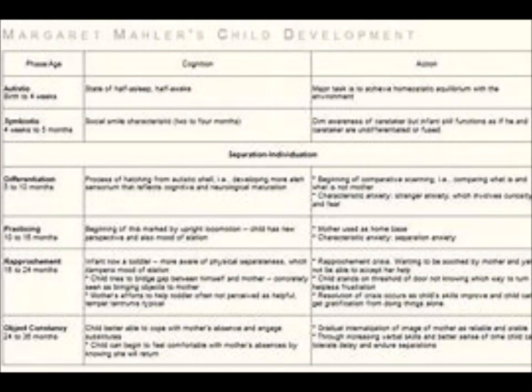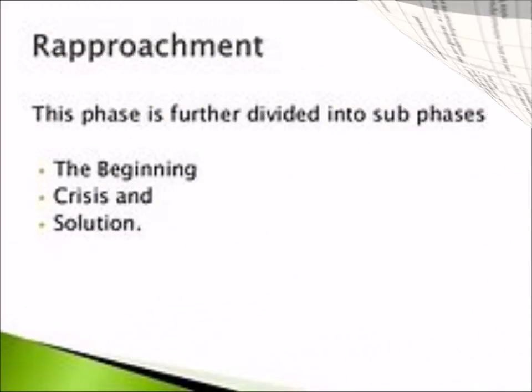Masterson, whose work also encompassed self theory as well as the neurobiology of personality disorders, was the author of many books, among them: 'The Personality Disorders Through the Lens of Attachment Theory and the Neurobiologic Development of the Self,' 'The Search for the Real Self,' 'The Narcissistic and Borderline Disorders,' and 'The Psychiatric Dilemma of Adolescence.'